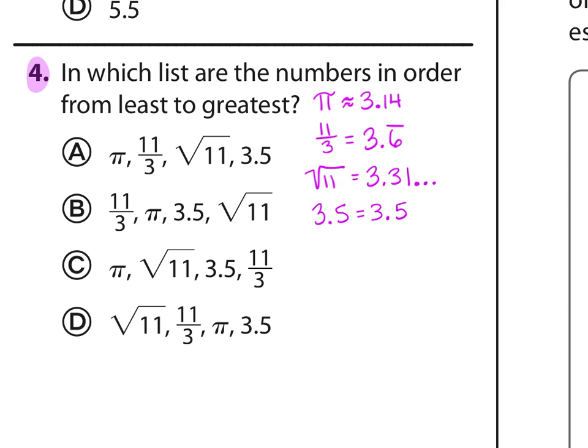So let's go through and put these in order from least to greatest. They all differ in the tenths place. We have 0.1, 0.6, 0.3, 0.5, so these will be easy to put in order from least to greatest. Our smallest is 3.14, our second smallest 3.31, our third smallest 3.5, and then our largest 3.6, and we're just looking at the tenths place because that's where they differ. And so the one that puts those in order, pi, then square root of 11, then 3.5, and then 11 thirds is answer choice C.